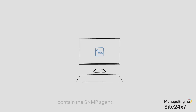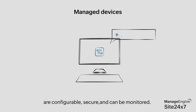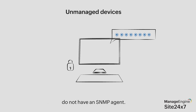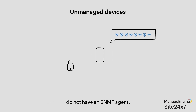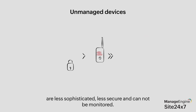Let us now look at managed and unmanaged devices. Any device that contains an SNMP agent is called a managed device. These devices can be configured, are more secure, and can also be monitored. The devices that do not have SNMP agents are called unmanaged devices. These are simple devices that start covering traffic once they are plugged in. They do not offer the sophistication of managed devices and are less secure.